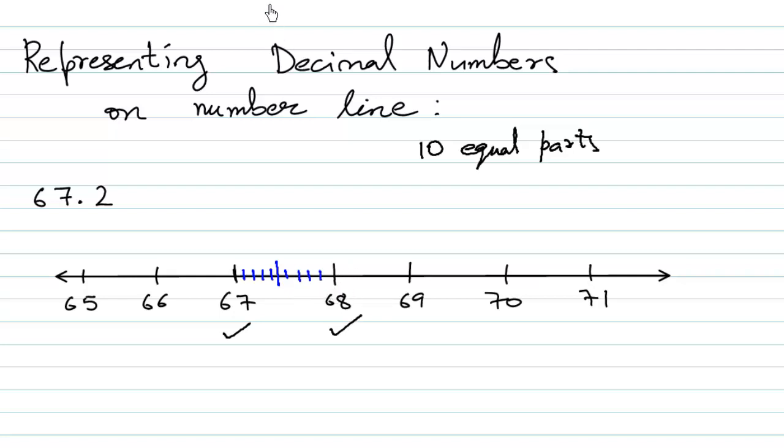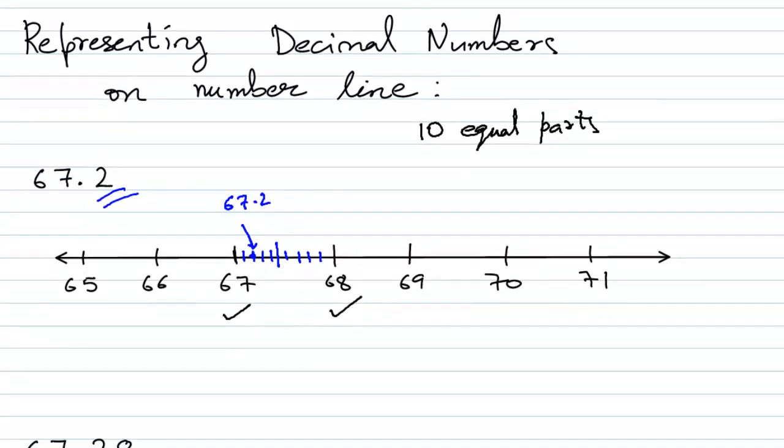So 67.2 will lie on the second part. So this particular thing is 67.2, this second division after 67 is 67.2. The fifth division is 67.5 and so on. And now if you want to find where will this 67.28 lie.